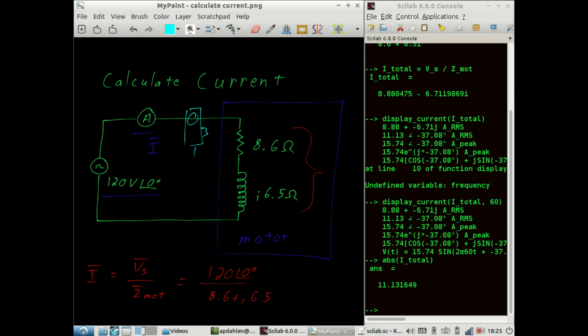If you're curious, find the data sheet for a one horsepower single phase motor that operates on 120 volts AC, and you'll find the current is indeed about 11 amps.